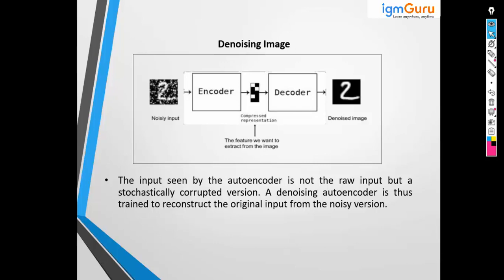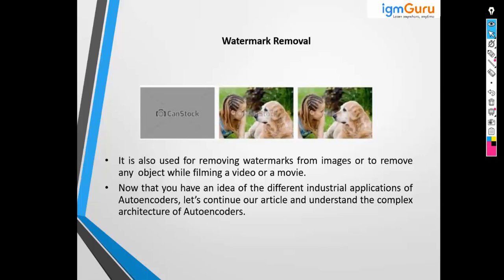Another application is denoising of images. For example, you might have a printout or an image of handwritten notes where the paper was crumpled, creating noise in the image. Similarly, old pictures often have noise when you try to print them. The autoencoder can convert such an image into a compressed representation, extract only the clean features, and produce a denoised final output.